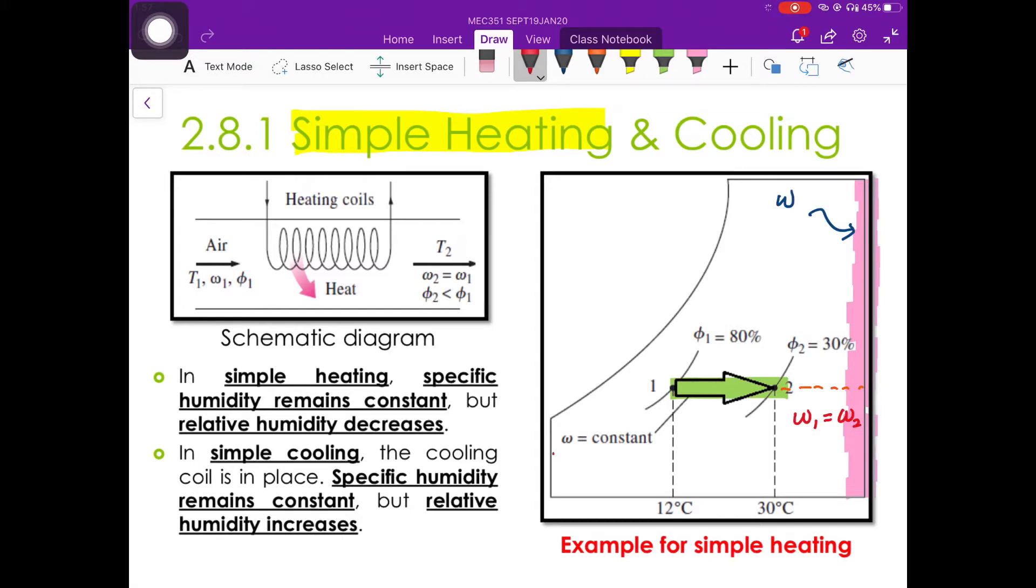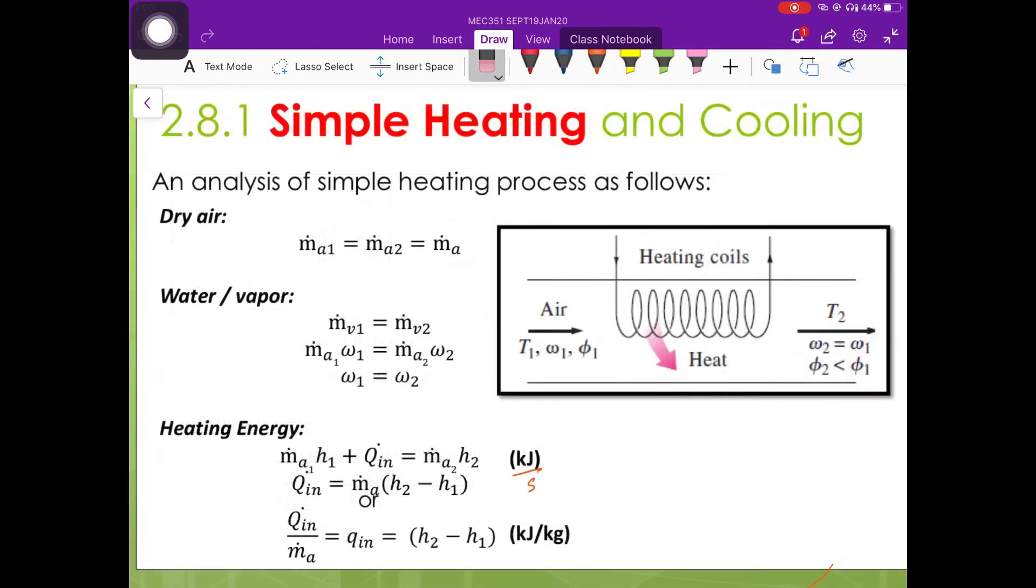Therefore, the specific humidity omega is constant. It is also observed that the relative humidity is reduced while the dry bulb temperature increases. Our area of interest will lie in this channel.